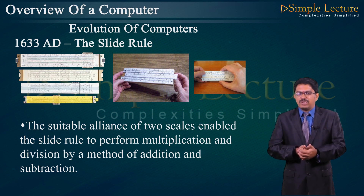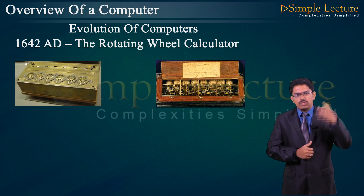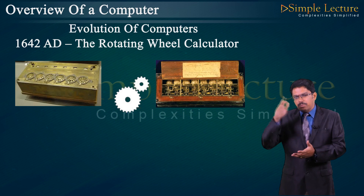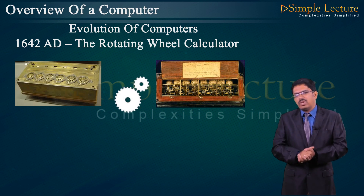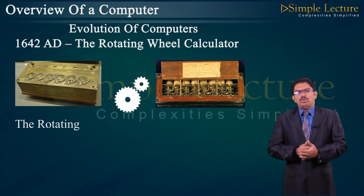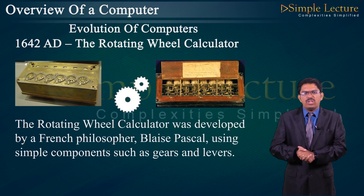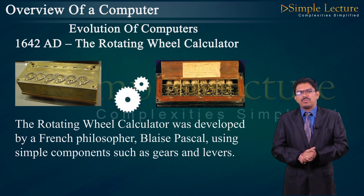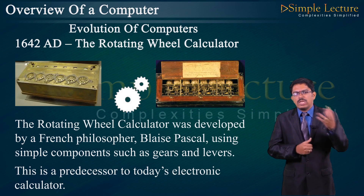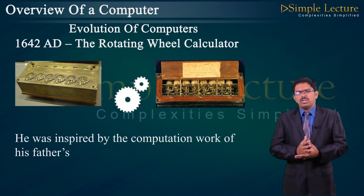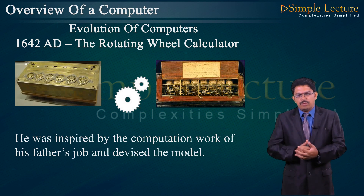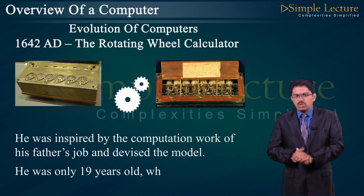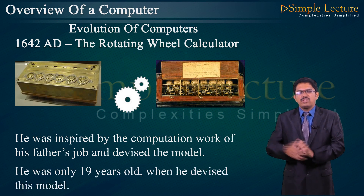The suitable alignment of the two scales enables the slide rule to perform multiplication and division by the method of addition and subtraction of logarithms. The Rotating Wheel Calculator was introduced in 1642 AD. Wheels rotate horizontally and vertically to calculate distances. It was developed by French philosopher Blaise Pascal using simple components such as gears and levers. It is the predecessor to today's electronic calculator. Pascal was inspired by his father's computation work and designed this model at only 19 years old.